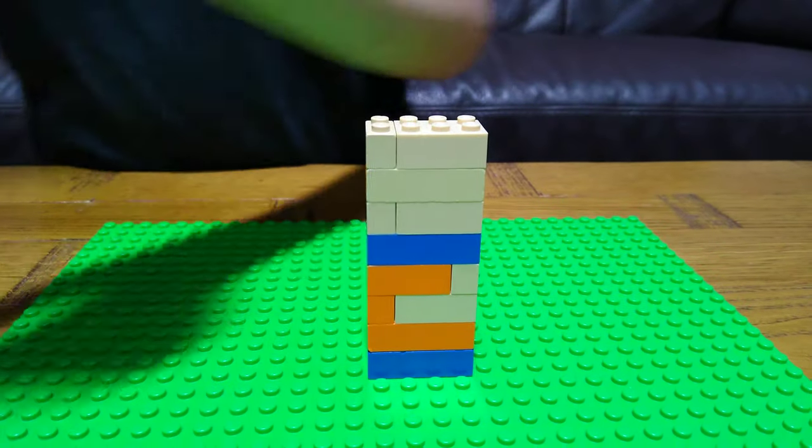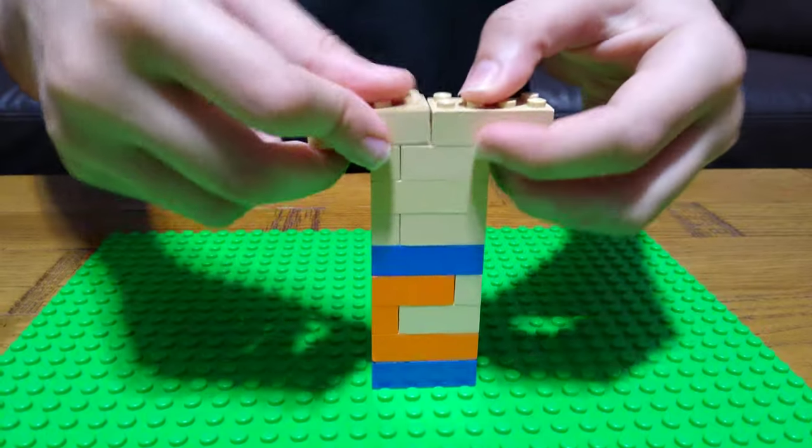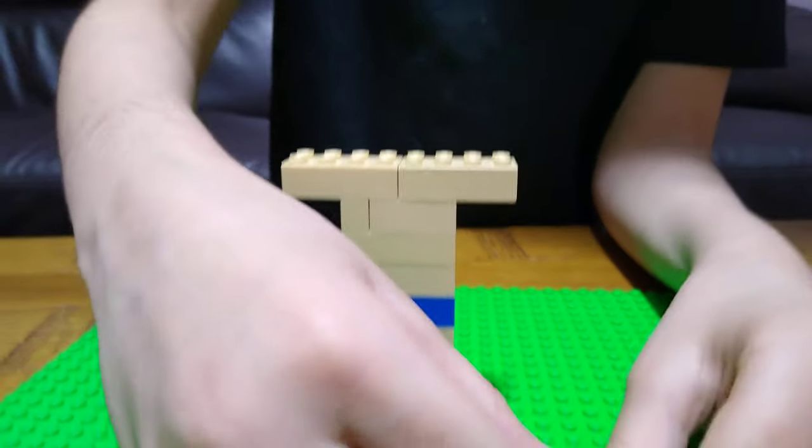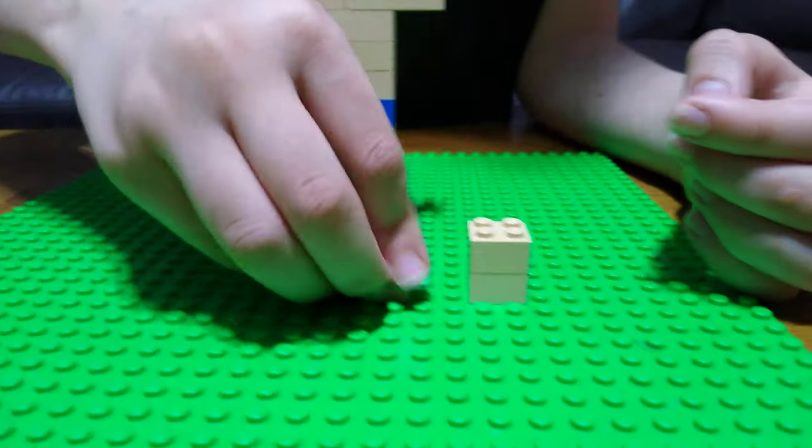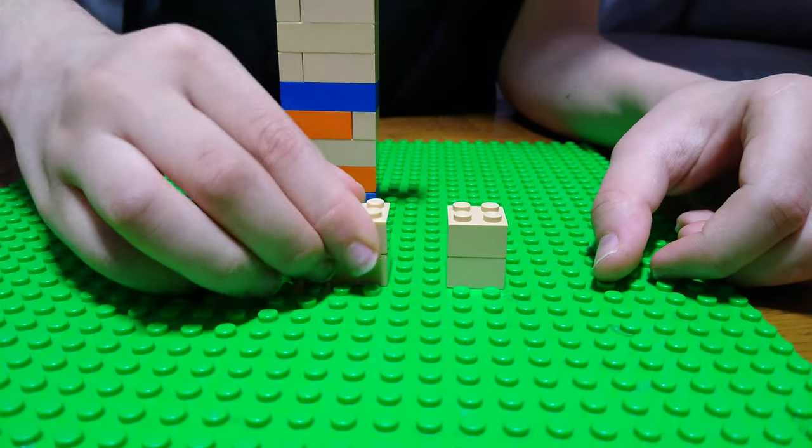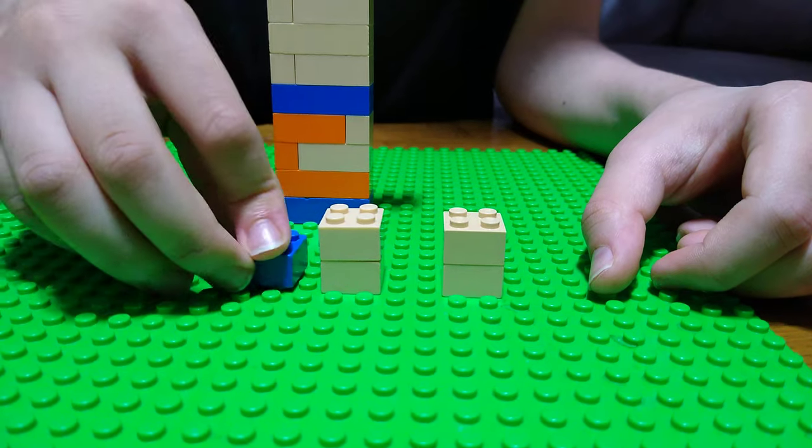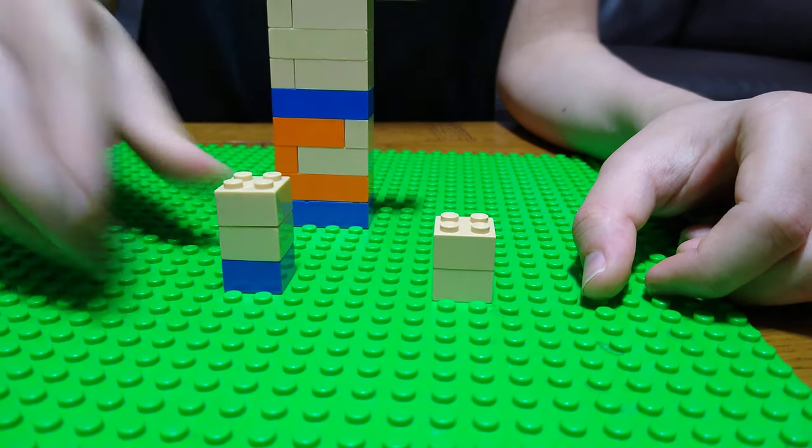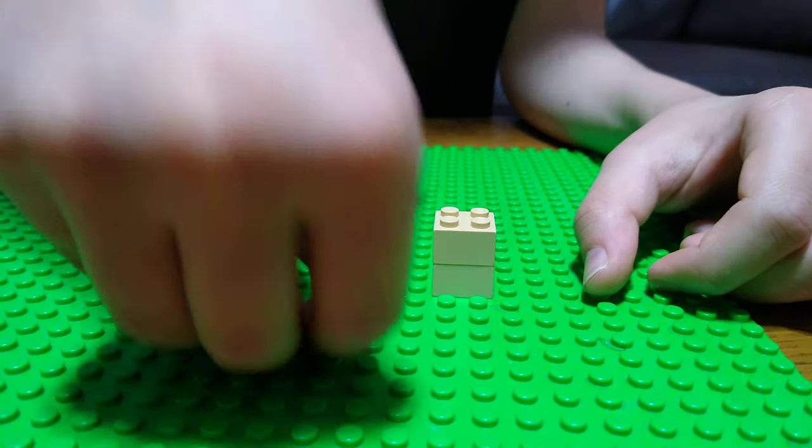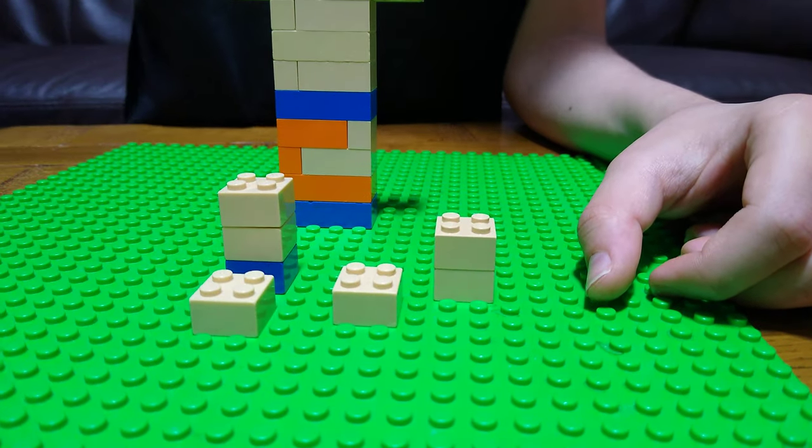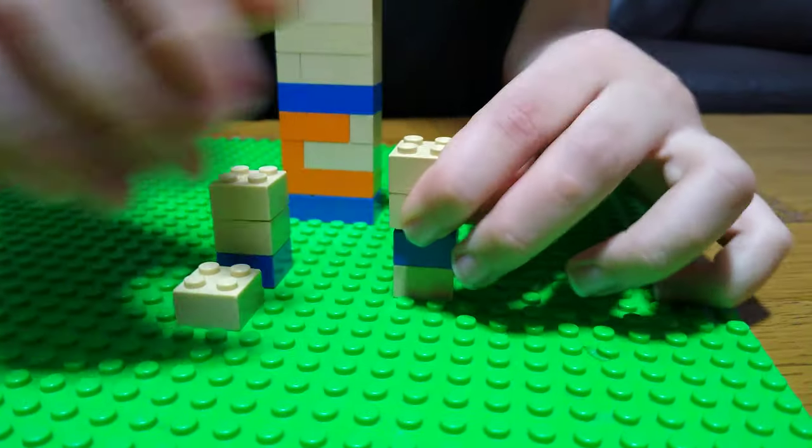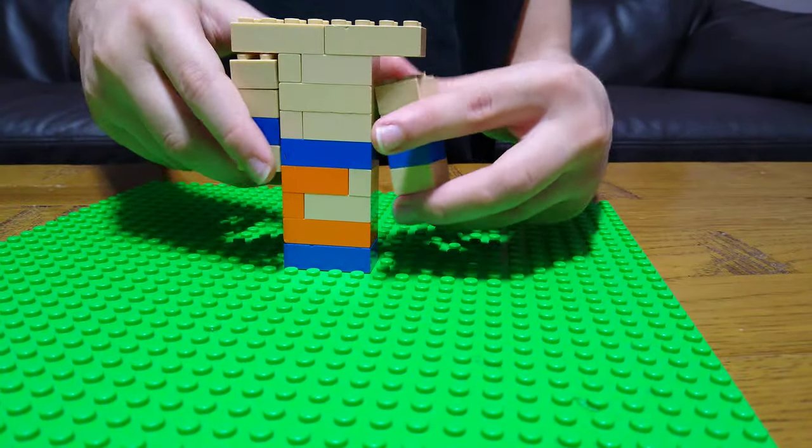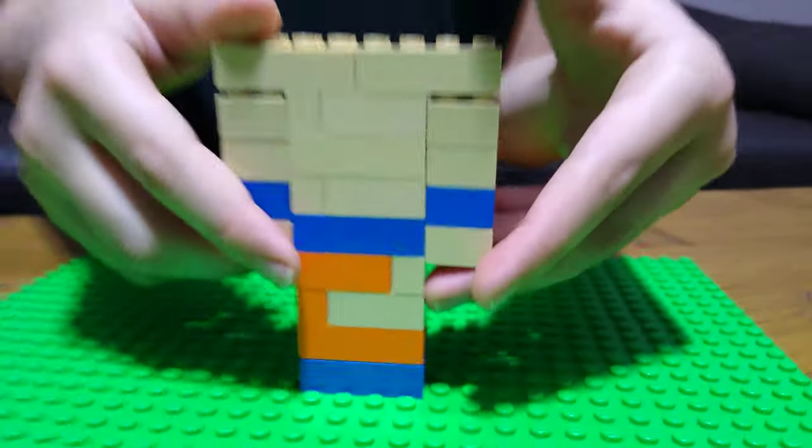So this is the main body, and now for the arms. So this is what you need now. These are the arms. Then just attach it on.